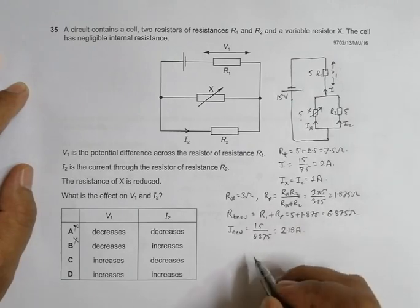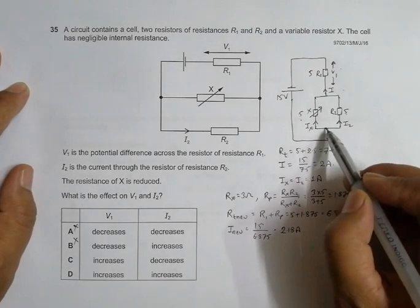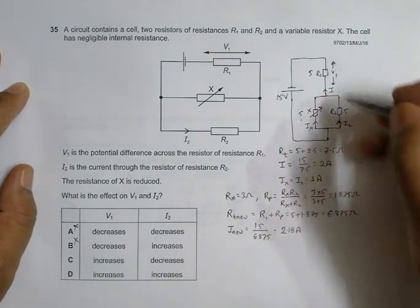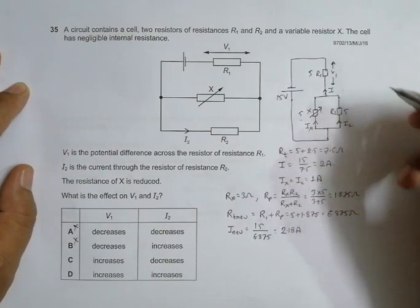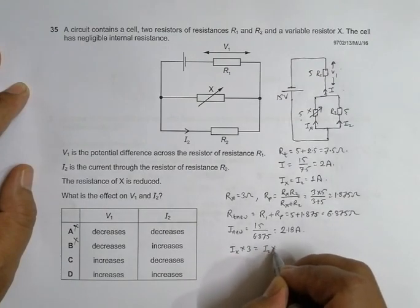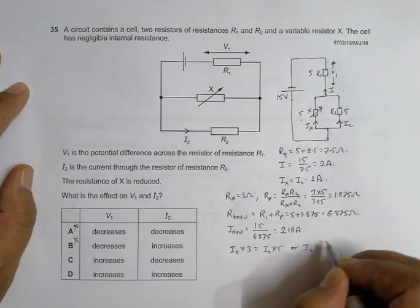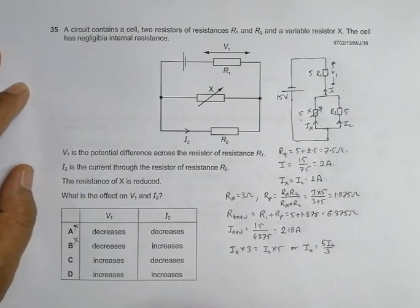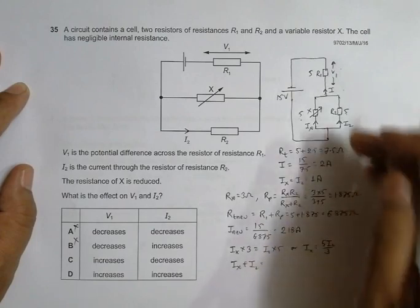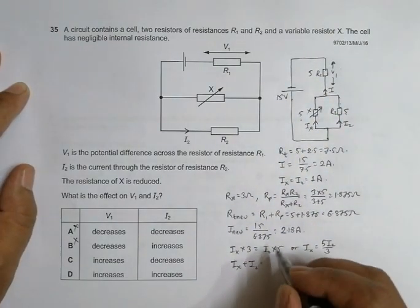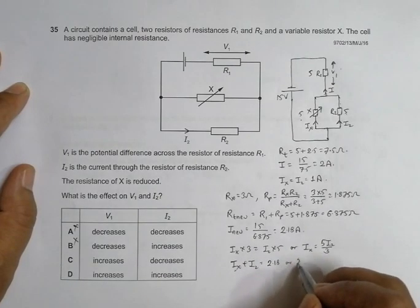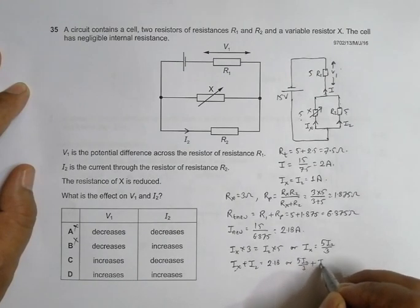Now, this I new will divide among these things according to the new resistance ratios. So what I have is, for the PD here, PD is equal for both of them, so I should have Ix into 3 should be equal to I2 into 5. This gives me Ix equal to 5 I2 by 3. Also, I know that Ix plus I2 is equal to this new current, which is equal to 2.18, which means Ix equal to 5 I2 by 3 plus I2 is equal to 2.18.